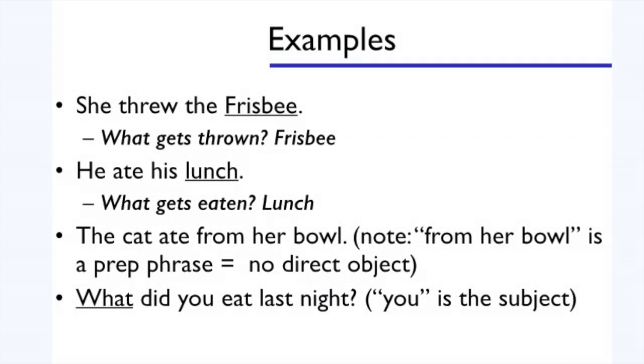Alright, let's look at some examples. In our first sentence, she threw the frisbee. There's no prepositional phrases to worry about, so we can move on to step two, where we find the subject. She. She is the one doing it. And the verb? What is she doing? Threw. Now, take that verb and make it into a question. What gets thrown? And the answer is frisbee. So frisbee is the direct object.